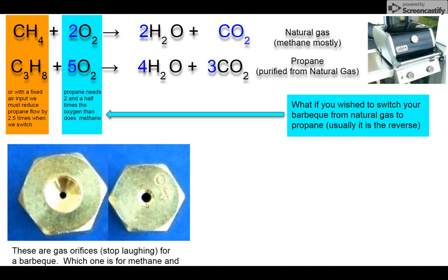So can you tell me which of these inlets allows you to use methane and which one lets you use propane? Well, if we can't change our air, then the propane machine must use two and a half times less propane to balance this equation. So that's the propane orifice. That's the methane.